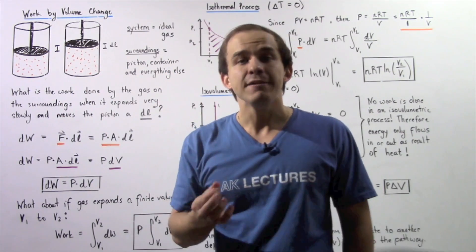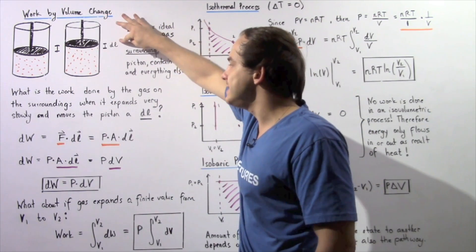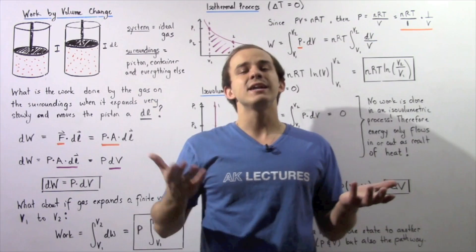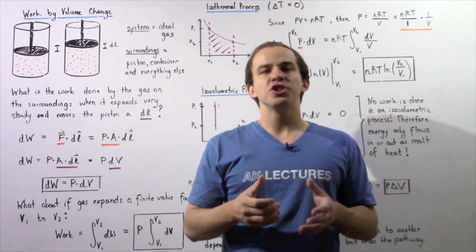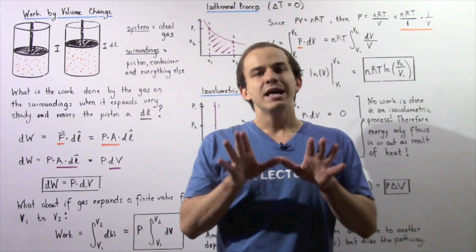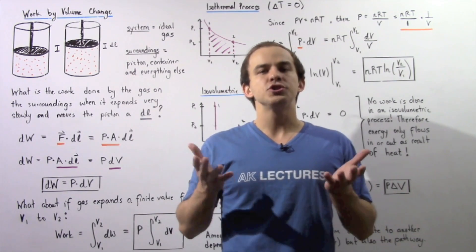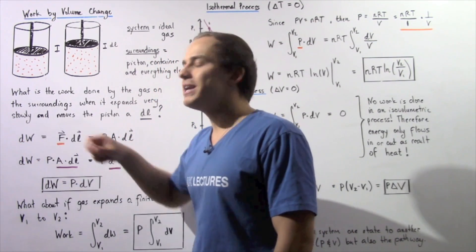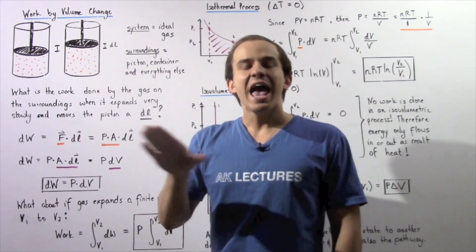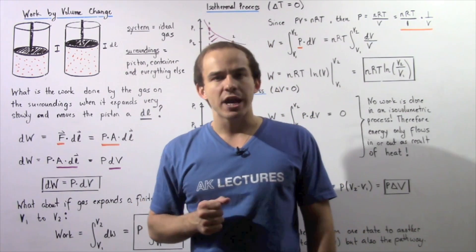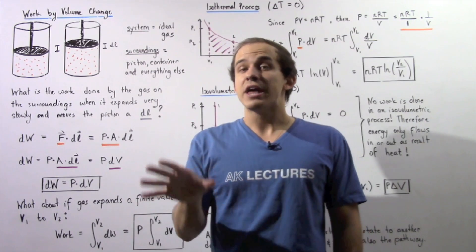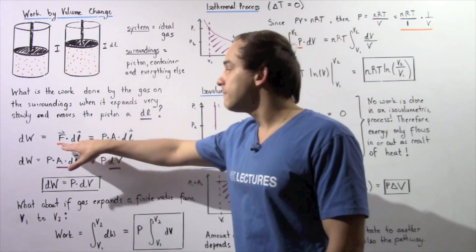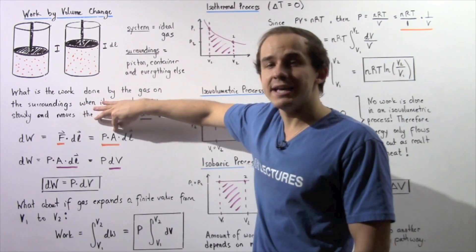The piston moves an infinitely small distance dl. Recall that work equals the product of force and displacement. Because we are dealing with an infinitely small change in displacement, we are dealing with an infinitely small change in work. So our infinitely small change in work, dW, equals the product of the force and the infinitely small change in displacement dl. Recall also that force equals the product of pressure and area, so we replace force with pressure times area.